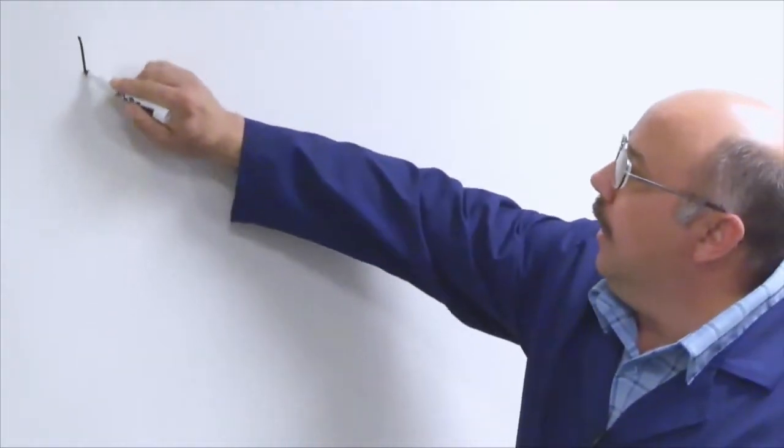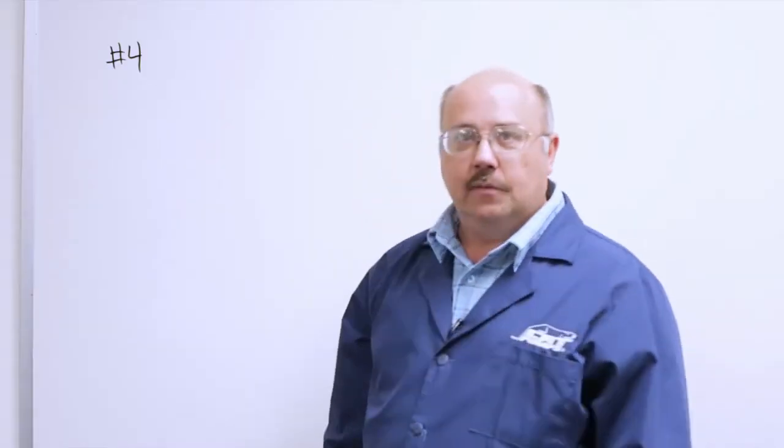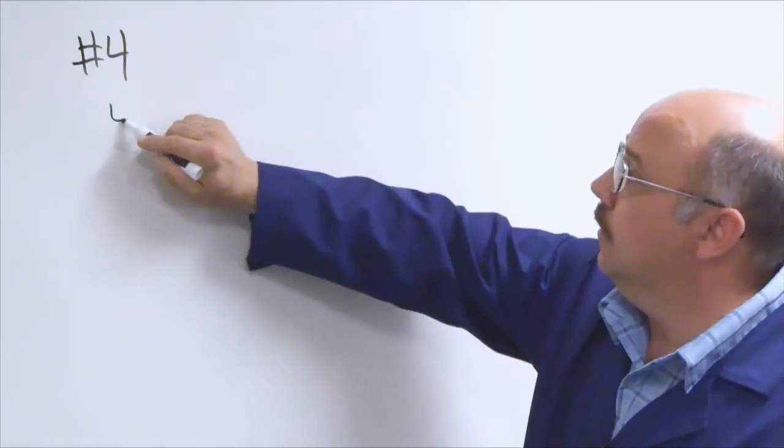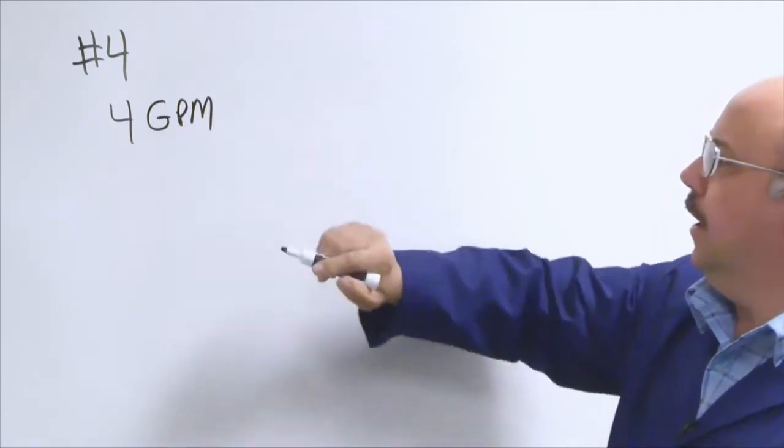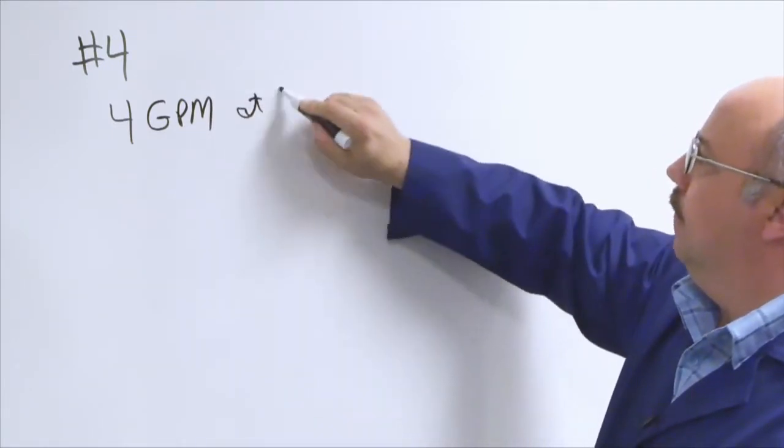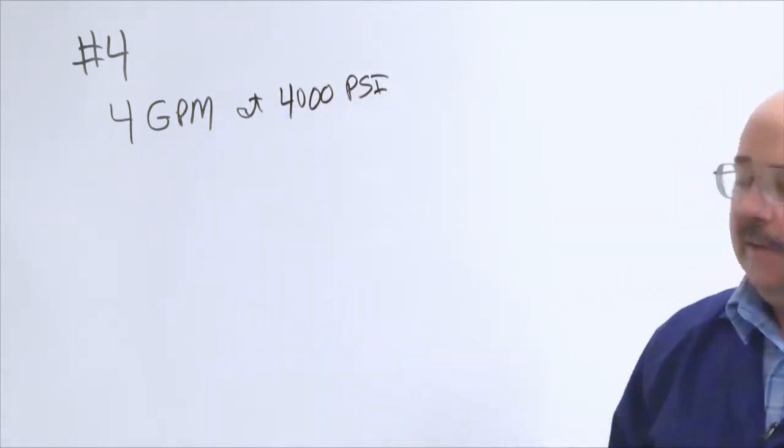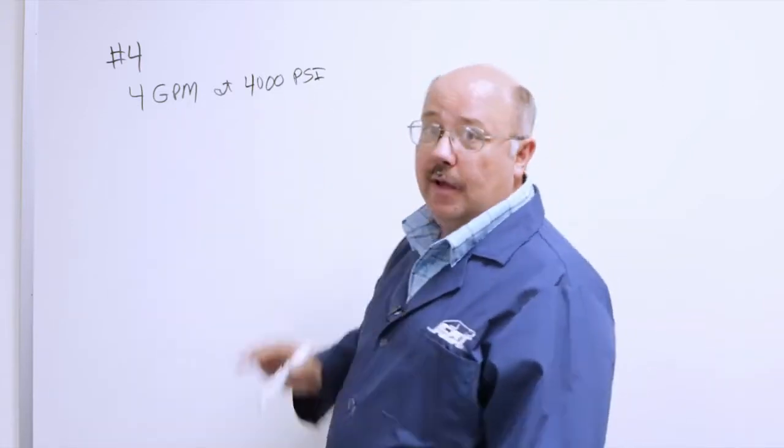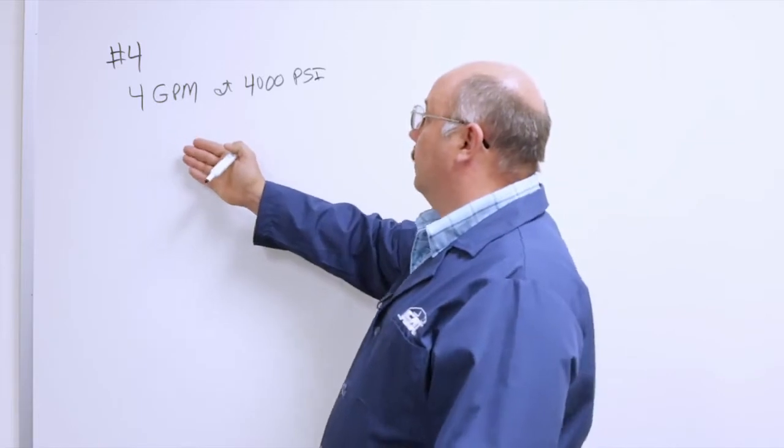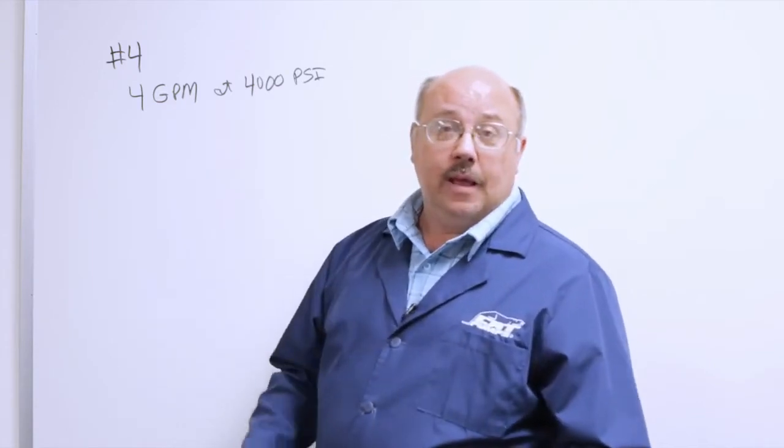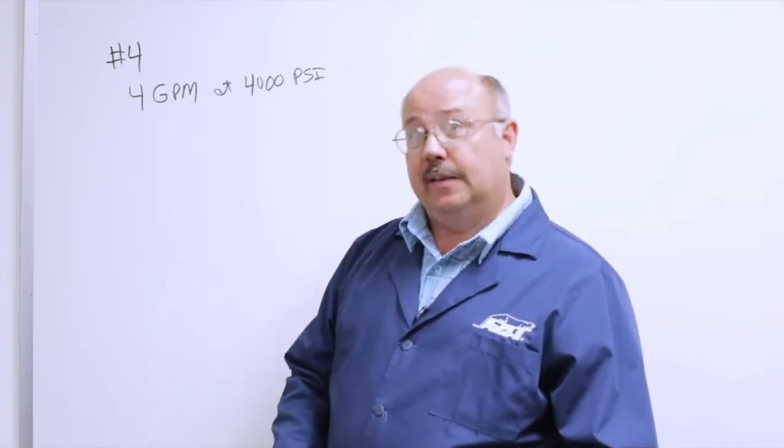Next, we're going to talk about nozzle sizing. Each nozzle has a size or a number associated with it. We're going to talk about a number four nozzle. What does that number represent? It represents the flow through the nozzle in gallons per minute GPM at 4,000 psi. So if I had a number three nozzle, it would be three gallons at 4,000. A number two nozzle would be two gallons at 4,000 psi. Now, we don't always have 4,000 psi on the nozzle, so we have to be able to calculate what flow and pressure we'll have at different rates.